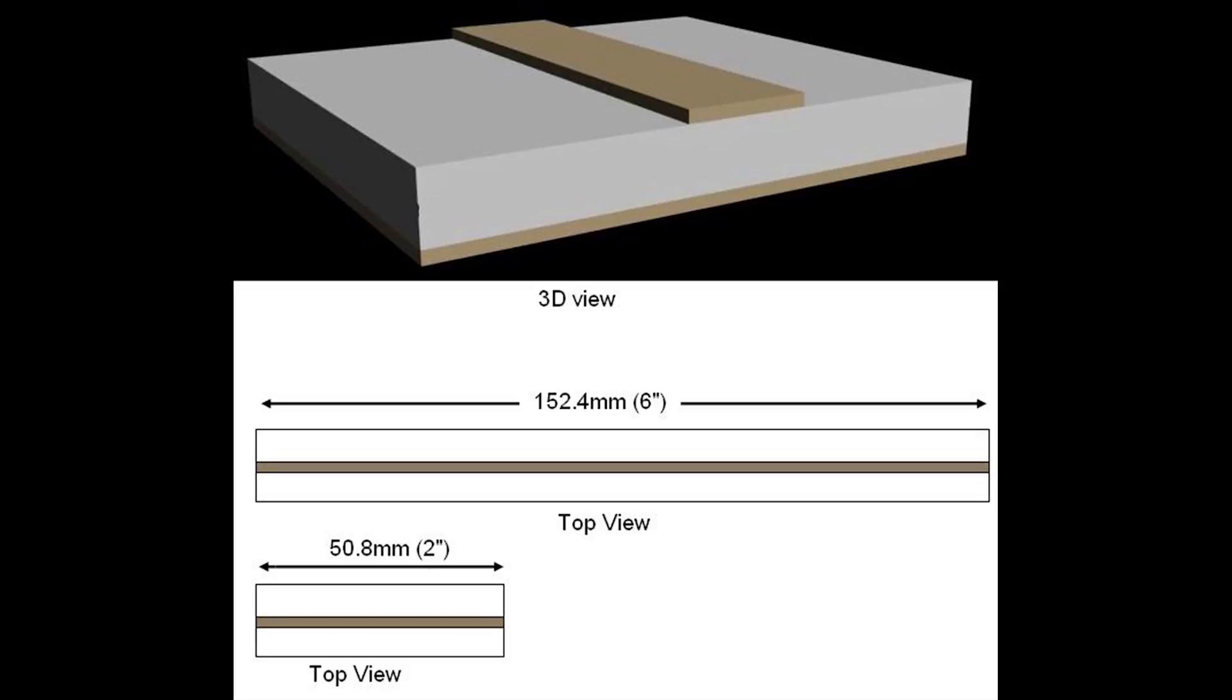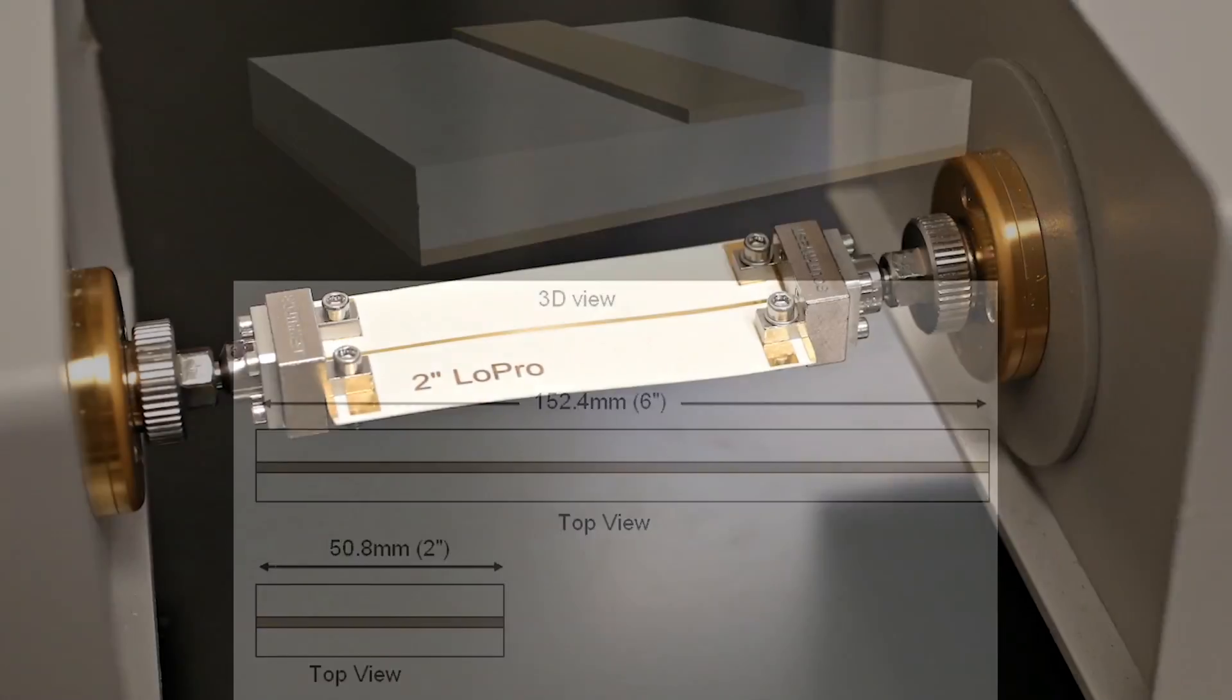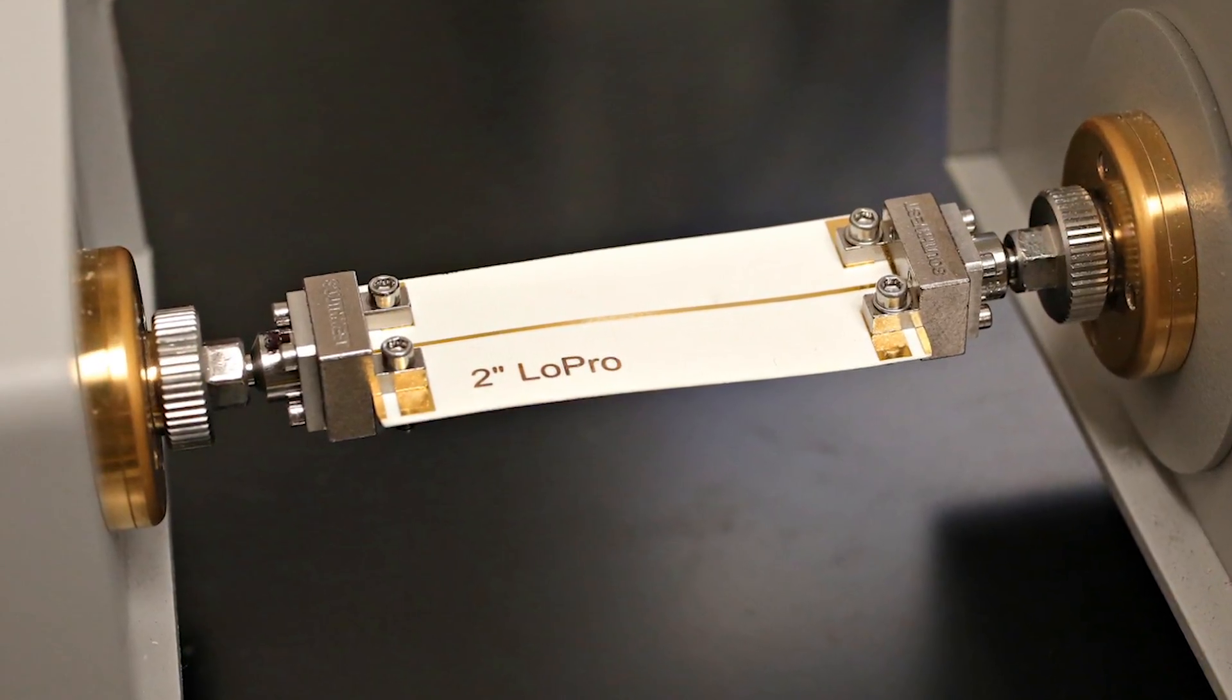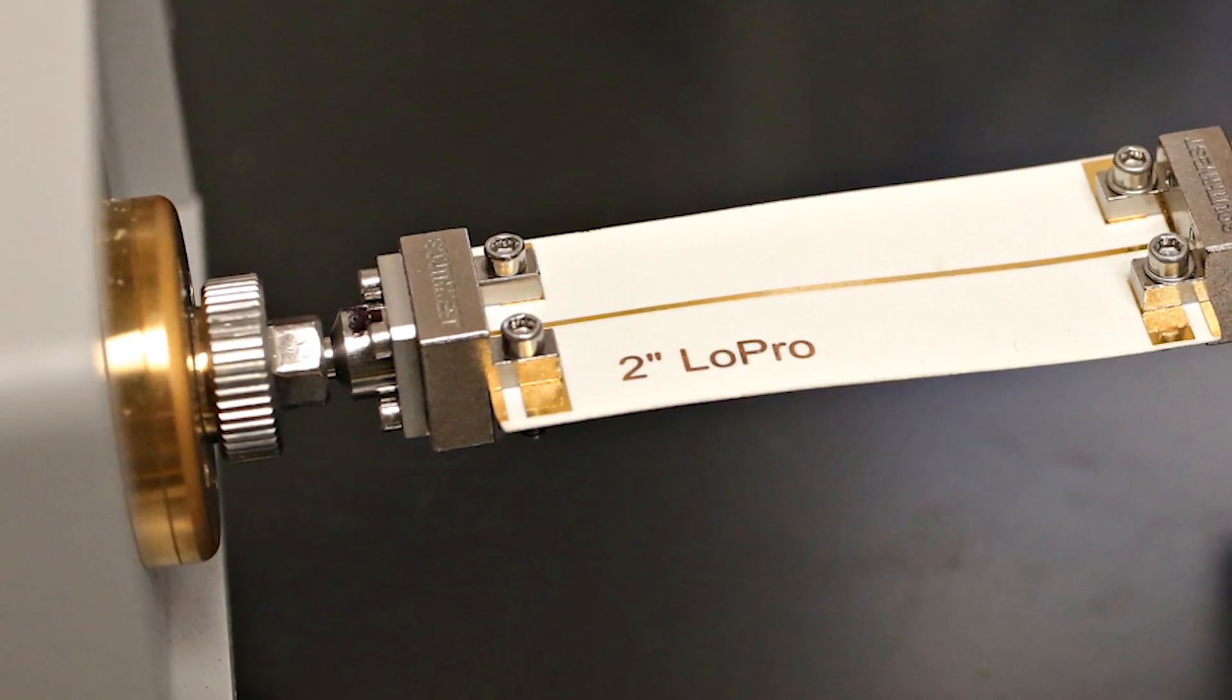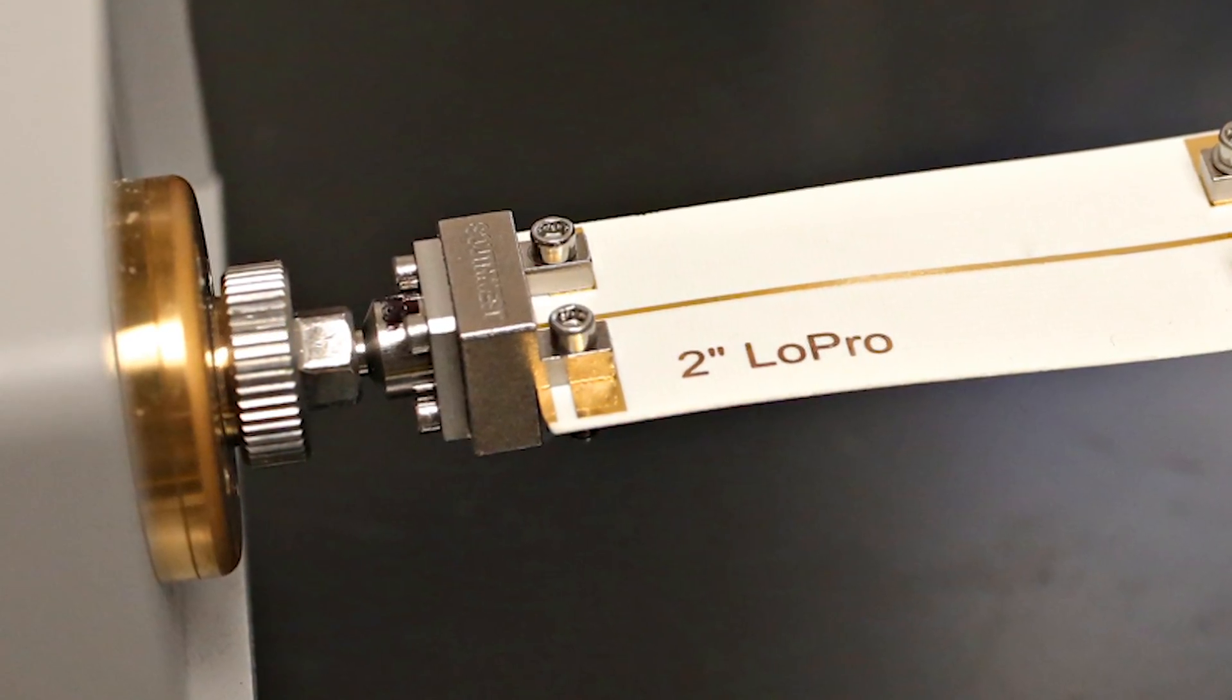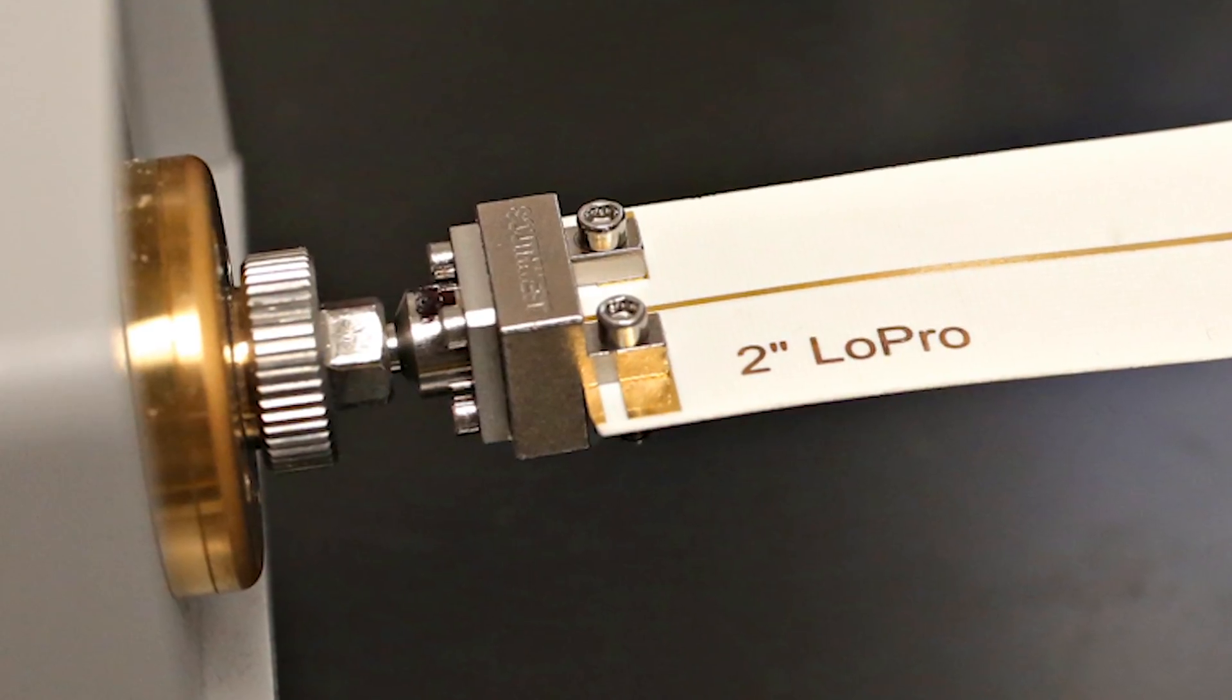They are microstrip transmission lines designed to be 50 ohm microstrip transmission lines. The circuits are connectorized and the connectors are not soldered, so they are field replaceable connectors that make contact by pressure. That way you can use the exact same connectors on the shorter circuit and also the same connectors on the longer circuit.